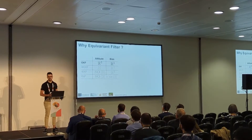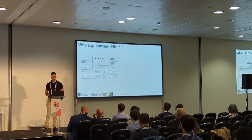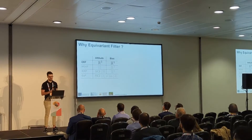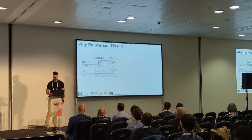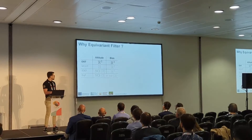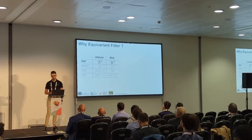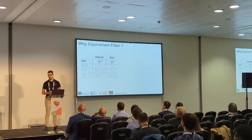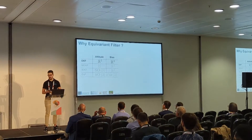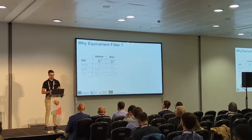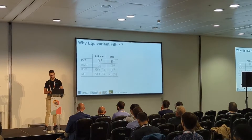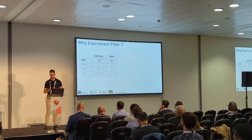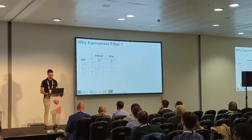I would like to start with a very simple problem: the attitude estimation problem, considering explicitly the gyroscope biases. If we start from the EKF, it parametrizes both the attitude and also the gyroscope biases on R3, so a clean case. We all know the problems that come with parametrizing the attitude with Euler angles due to the singularities they have.